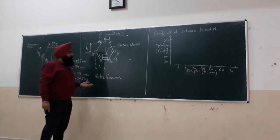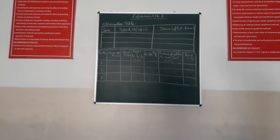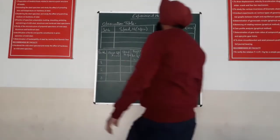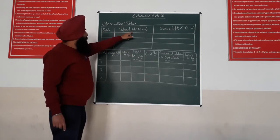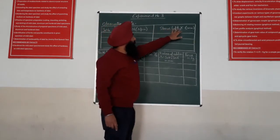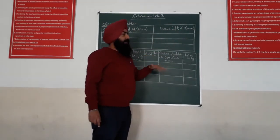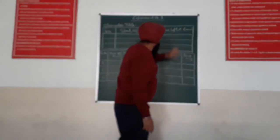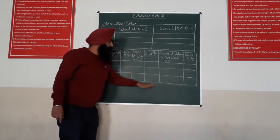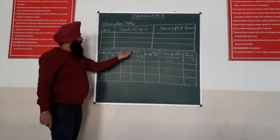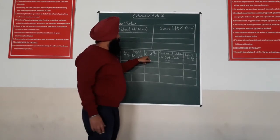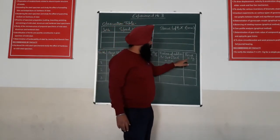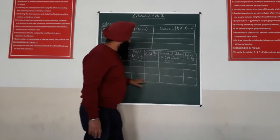Now we come to the observation table. The observation table has: serial number, speed of the governor in RPM measured by the tachometer, and sleeve displacement X, which is the difference between the initial reading and the final reading. From these readings we prepare the calculation table, where we calculate: sleeve lift, RPM, height of the governor, angle alpha, radius of rotation, and centrifugal force in kg.